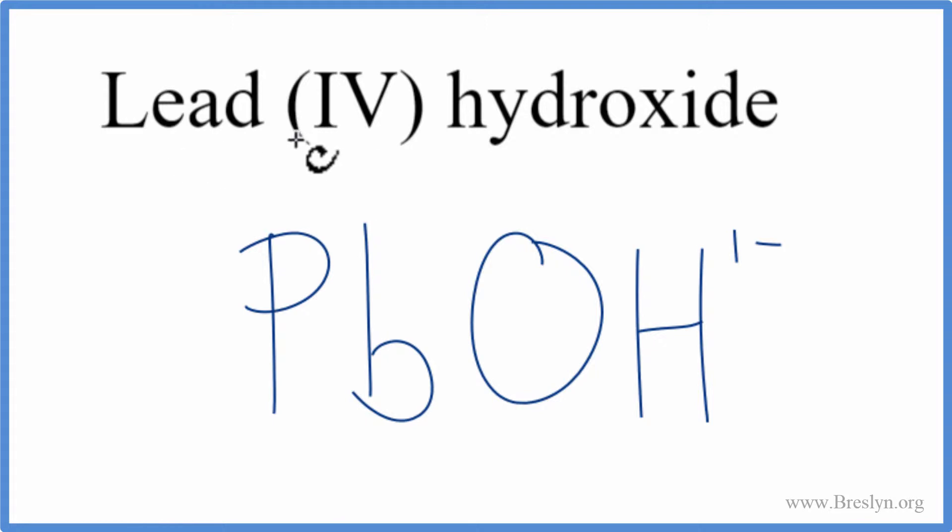Lead, it tells us right here, the Roman numeral IV, that it has a 4+ ionic charge. And we know the hydroxide has a 1-. So these don't add up to zero, so we don't have a net charge of zero. We can change the subscripts here, though, to make that happen.